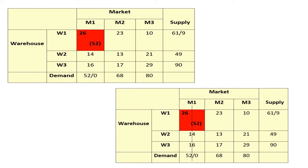Initially supply was 61 units. We allocate 52 to the cell, so 61 minus 52 leaves 9 units remaining in supply. For the demand column, demand was 52 and we assign 52 units, so demand becomes 0 — written as 52/0. As demand is fulfilled, we cross out that column M1.